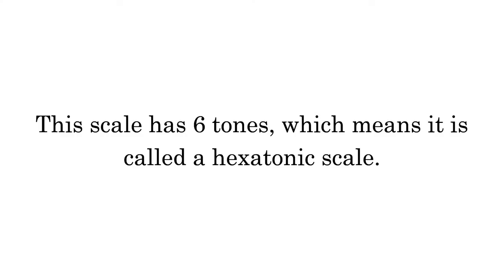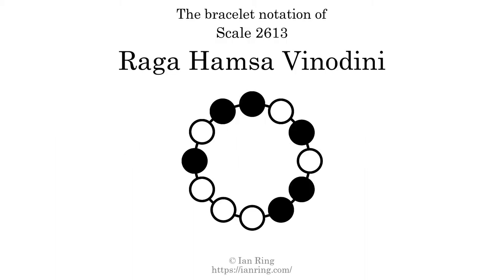This scale has 6 tones, which means it is called a hexatonic scale. This is a bracelet notation diagram of scale 2613. The shaded circles represent tones that appear in the scale, and they are read clockwise, starting at the top.